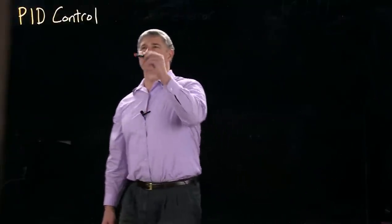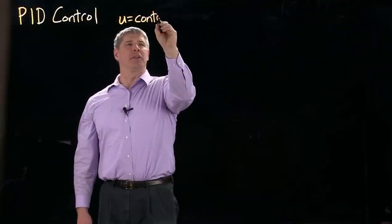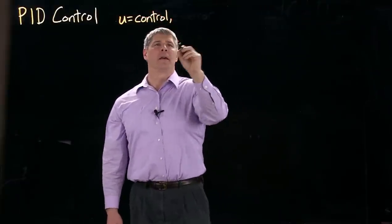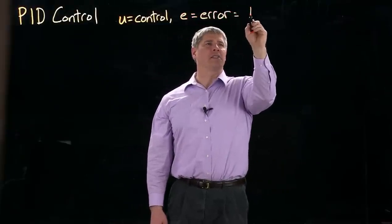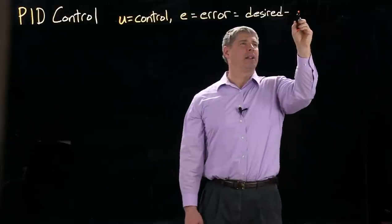Let's give variables to those. We'll call U the control signal or the torque to the motor. The error is called E and that's just the desired output value minus the actual.